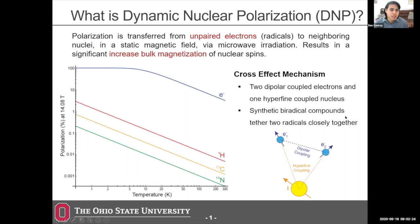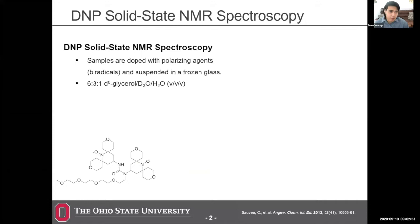For our samples, the main DNP mechanism we look at is a cross-effect mechanism. We have two unpaired electrons that are dipole-coupled, achieved by tethering them together through an organic compound. These are close to another nucleus, primarily proton, and we achieve the DNP through this mechanism. In DNP solid-state NMR, we first dope our samples with a polarizing agent — typically biradicals, or really anything with a free electron. For biological and aqueous samples, we use a mixture of glycerol, D2O, and water.